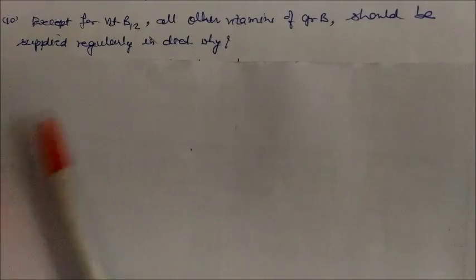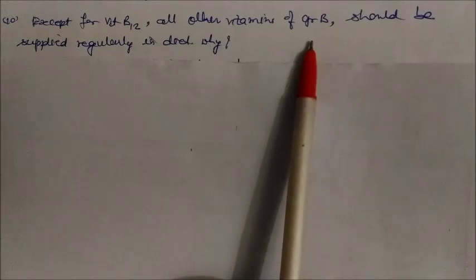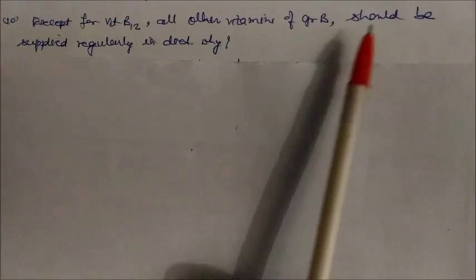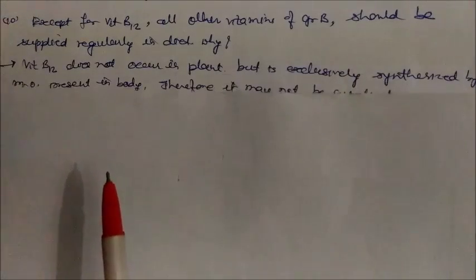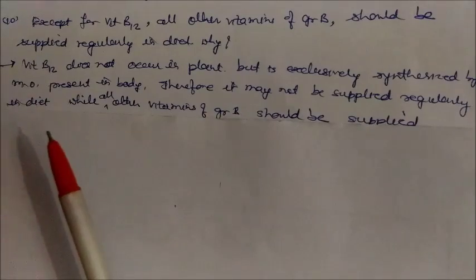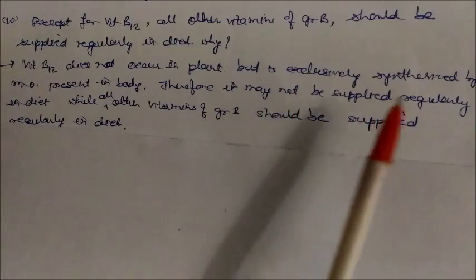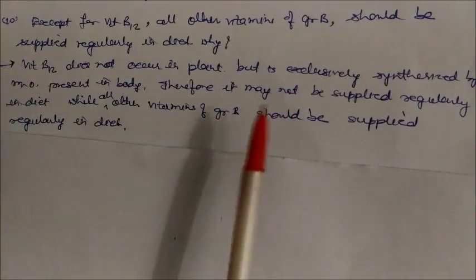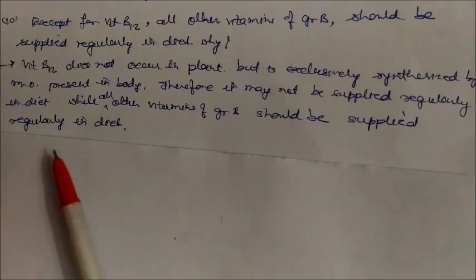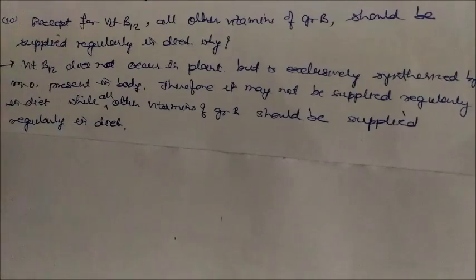Except for Vitamin B12, all other vitamins of the B group should be supplied regularly in the diet — why? Vitamin B12 does not occur in plants; it is exclusively synthesized by microorganisms present in our body. Therefore it may not need to be supplied regularly in the diet, while all other B-group vitamins must be regularly supplied through diet.